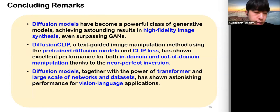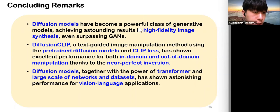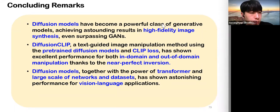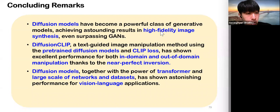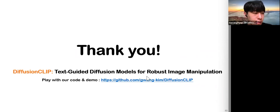Concluding remarks: diffusion models have become a powerful class of generative models, achieving astounding results in high-fidelity image synthesis, even surpassing GANs. Diffusion Clip, a text-guided image manipulation method using pre-trained diffusion models and CLIP loss, has shown excellent performance for both in-domain and out-of-domain manipulation thanks to near-perfect inversion. Diffusion models, together with the power of transformers and large-scale networks and datasets, have shown astonishing performance for visual-language applications. Thank you for your attention.